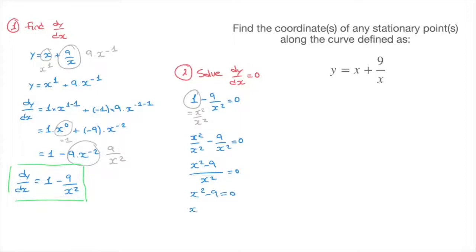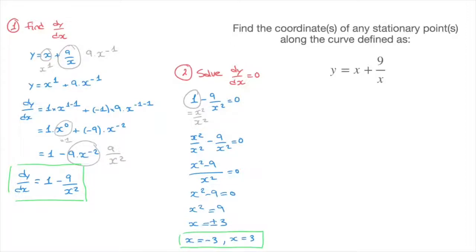Solving x squared minus 9 equals 0 leads to x squared equals 9. That has two solutions: x equals plus or minus 3 — in other words, x equals negative 3 and x equals 3. We now have the x coordinates of two stationary points, and that's step two done.